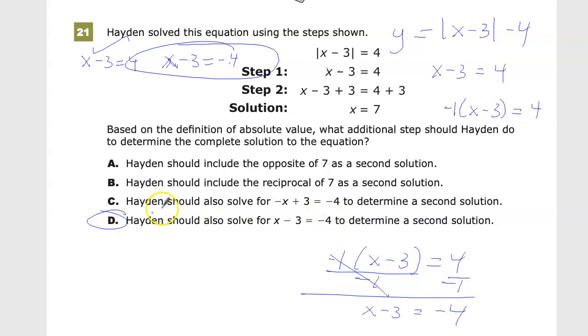So, there are your answer choices. Hayden should include the opposite of 7. The opposite of 7 would be negative 7. The problem is, if he had just had this, for instance, and he'd taken the square root, yeah, that could have gotten you the opposite of that.